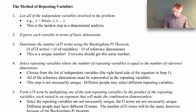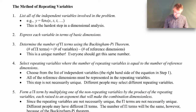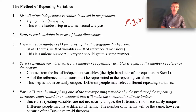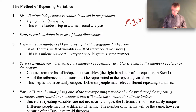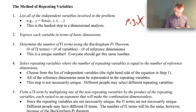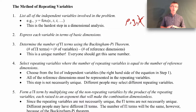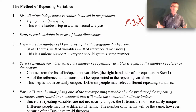Step one in the method of repeating variables is to list all the independent variables involved in the problem. You want the independent variables — for example, if you have density, gravity, and specific weight in your list, those are not all independent because specific weight is density times gravity. You need them all to be independent. Also, we don't know what this function is — dimensional analysis doesn't tell us the function. It only focuses on the variables involved. To find the function, you have to run experiments or some other analysis like the Navier-Stokes equations.